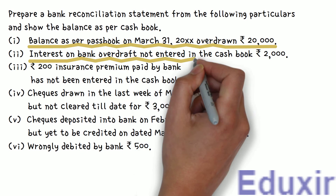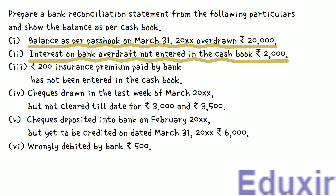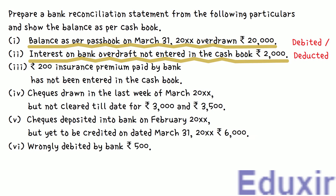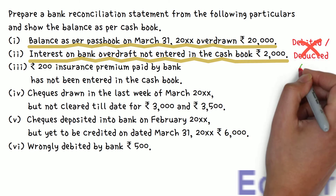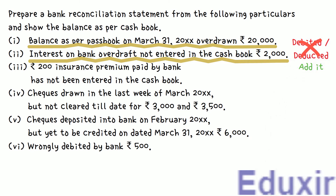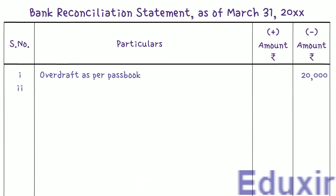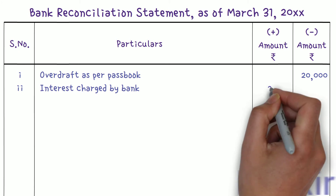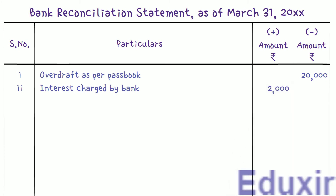Next, it is given that the interest charged by the bank on the overdraft balance is not entered in the cashbook. When there is an overdraft balance, the bank charges interest and directly debits this amount in the passbook. The business will not be aware of these charges until the bank statement is received, so we need to add this amount to the passbook balance to get the cashbook balance. We record the particulars as 'Interest charged by bank' and enter ₹2,000 in the plus amount column.